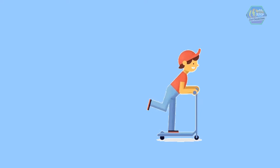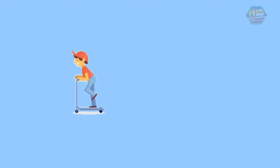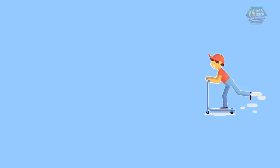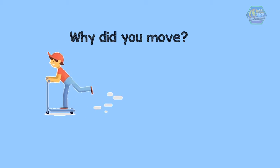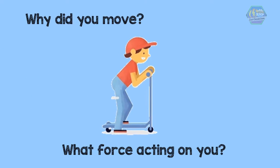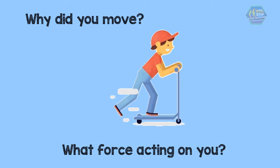To explain this further, let us suppose you are riding your scooter. Your foot presses backward against the ground, and that force acts on the ground, so you moved. This means that a force must have acted on you too. You moved because the action force of your foot against the ground created a reaction force of the ground against your foot.